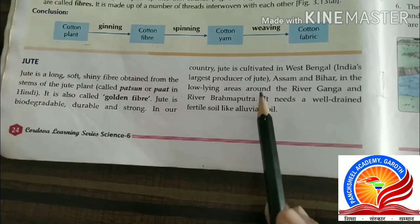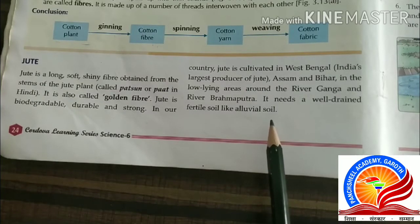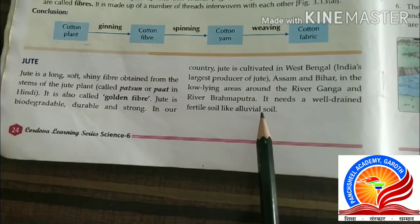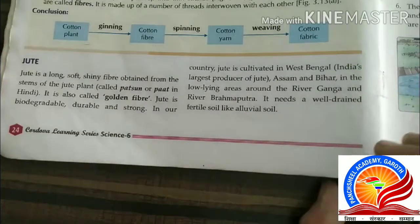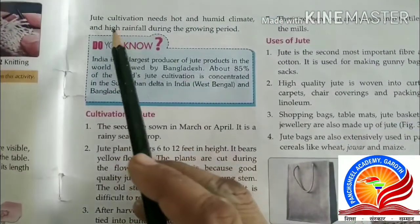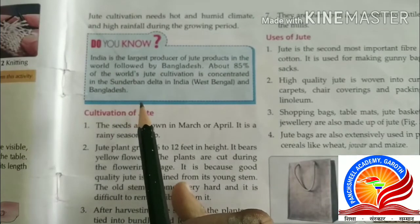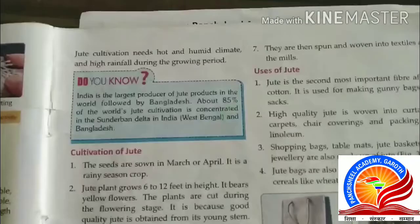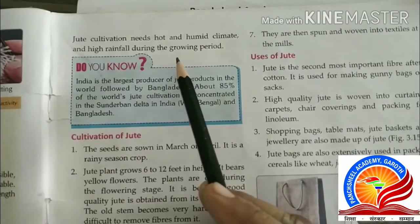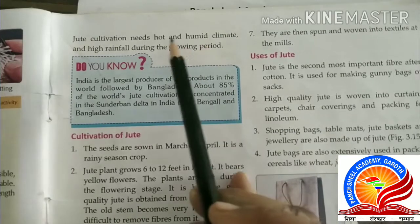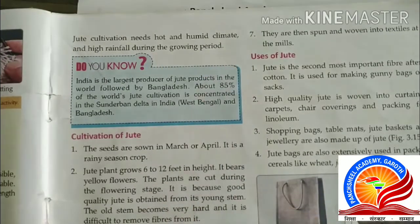In order to grow jute, alluvial soil is required. Alluvial soil is the type of soil found near rivers — it is a mixture of sand and soil. Jute cultivation needs a hot and humid climate. For the jute plant, a hot and humid climate with high rainfall during the growing period is needed, as found at the coastal sides of rivers.